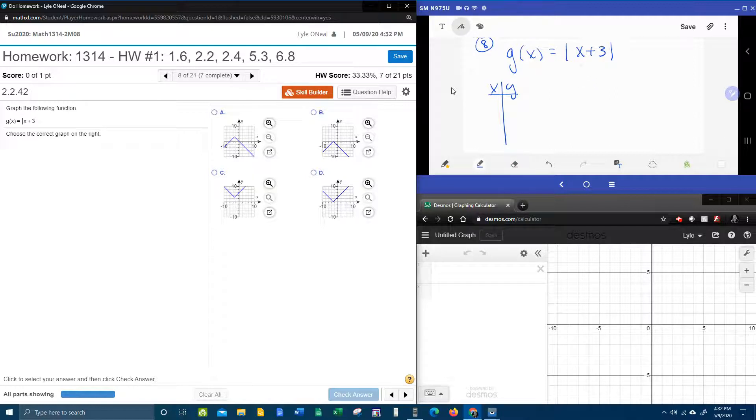So what X would make the stuff inside the absolute value zero? That would be negative three. Negative three plus three is zero, and the absolute value of zero is zero.